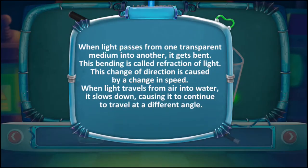When light passes from one transparent medium into another, it gets bent. This bending is called refraction of light. This change of direction is caused by a change in speed. When light travels from air into water, it slows down, causing it to continue to travel at a different angle.